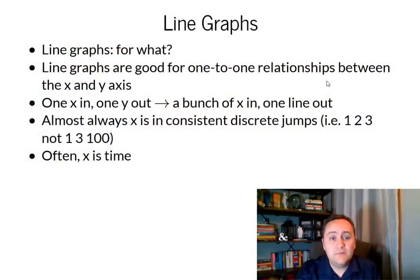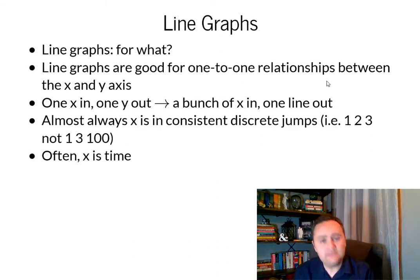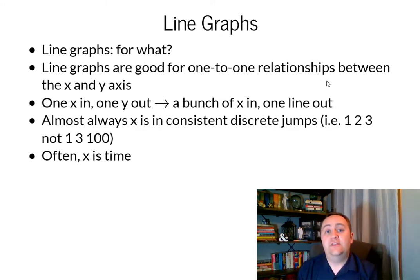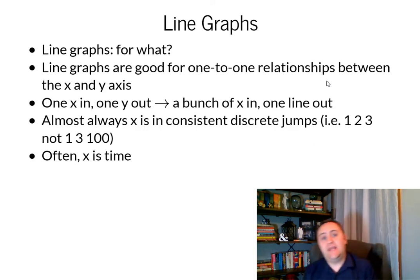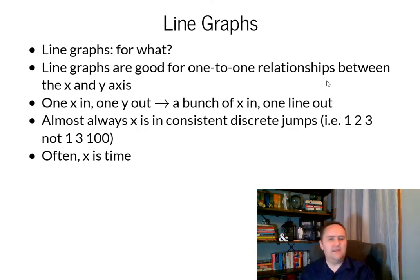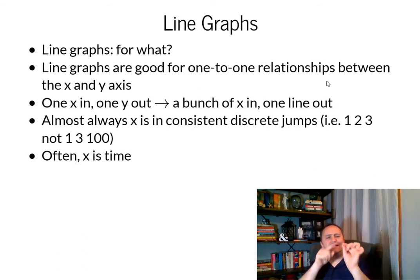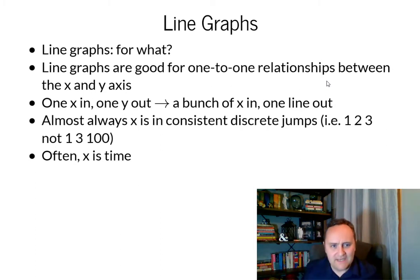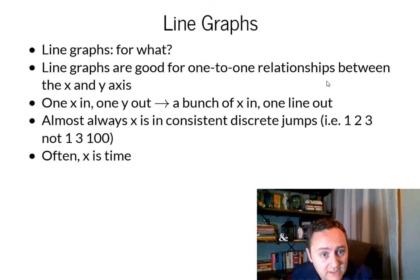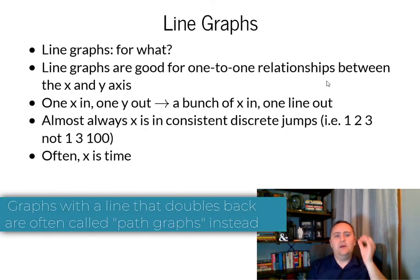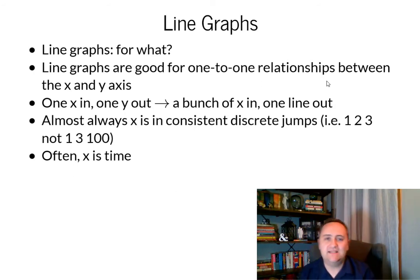So first of all, what are line graphs good for? What kinds of stories? Well, generally line graphs are good for one kind of thing: things where you have one x variable in, and that gives you one y value out. There's a one-to-one relationship between x values and y values. The x values always go forward — nothing doubles back. You don't have an x-axis that goes 2009 to 2010 and then back to 2009 again. That wouldn't make any sense for a line graph. You have a single y point for every x point. Maybe you have multiple lines on the same graph, but every single line has that same relationship: one x in, one y out.